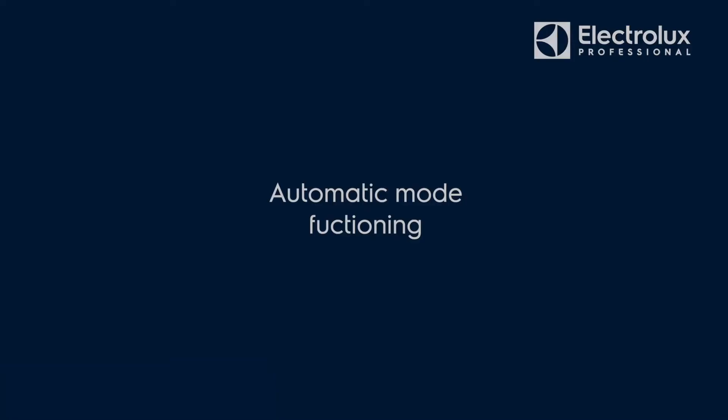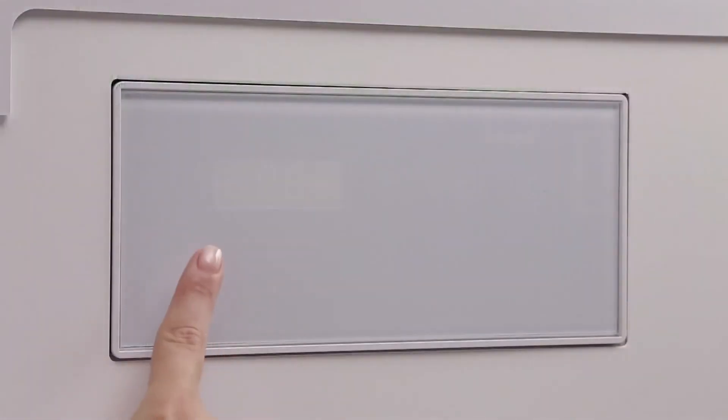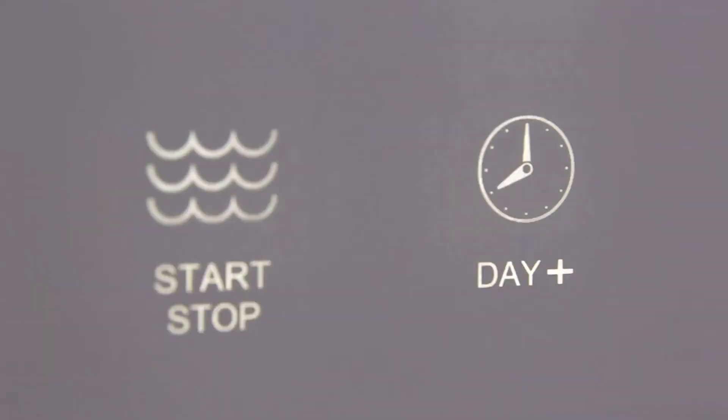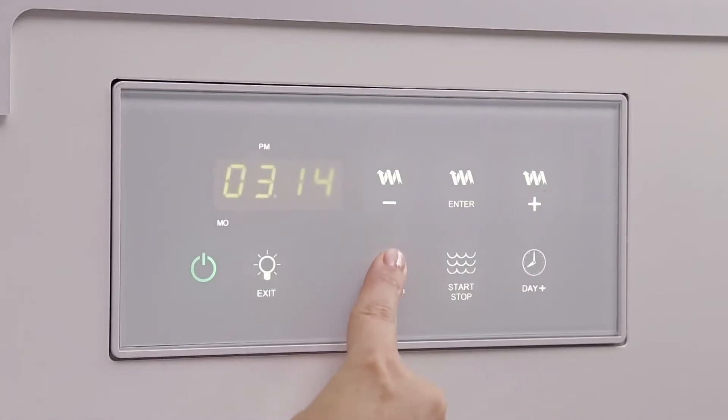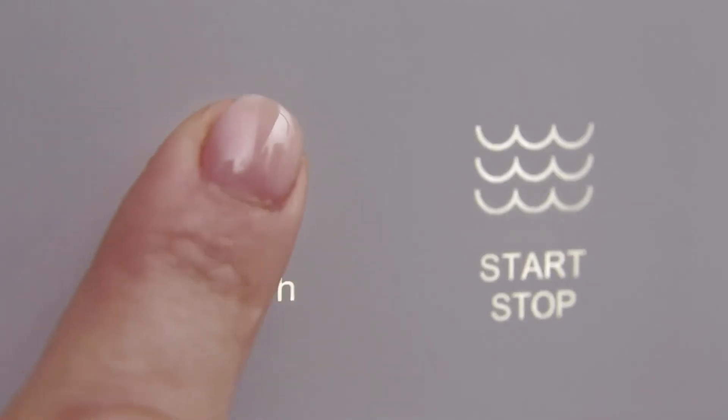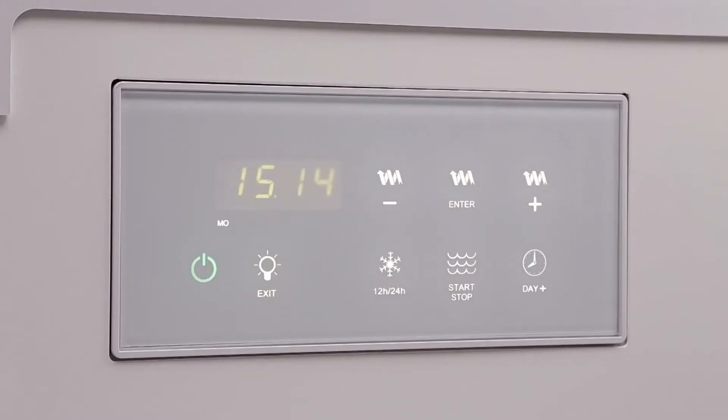Automatic mode. In order to activate the setting mode, it is necessary to hold your finger on the on-off button for 6 to 7 seconds. An acoustic signal will advise the user about the setting procedure activation. Push the day plus button until the right day is shown. Set the 12-hour or 24-hour mode by switching from one mode to the other with the 12-hour 24-hour button.